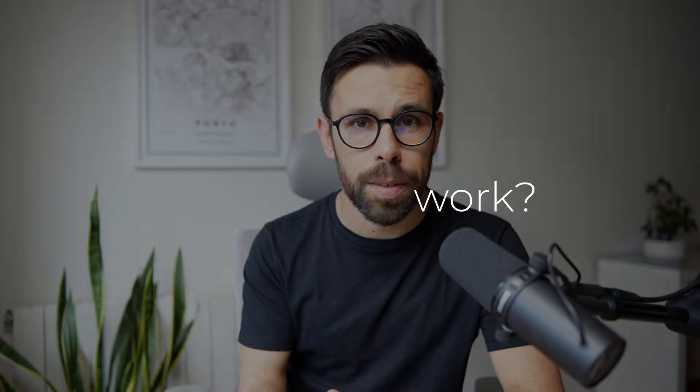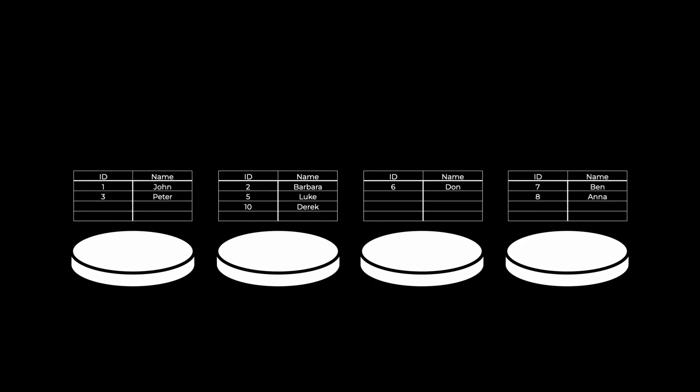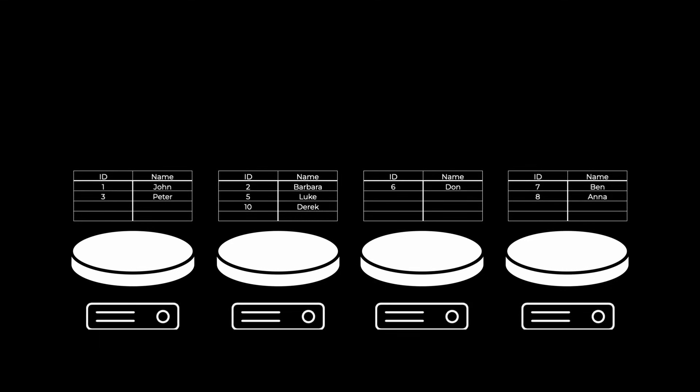How does it work? We start with a huge database and split it into several smaller databases — shards — spreading the data across them. Multiple shards will share the same schema. Each shard lives inside a node, a server, which we call the physical shard. The data living inside that node is called the logical shard.